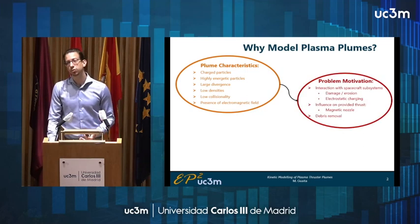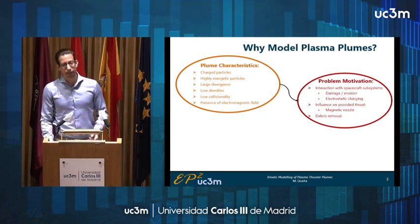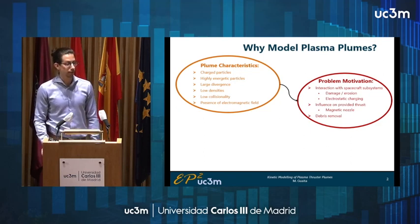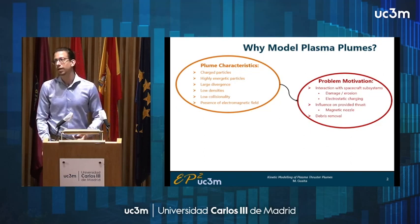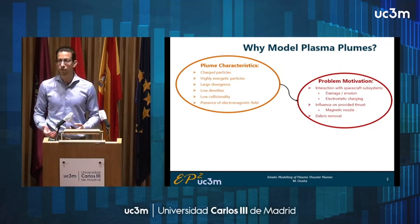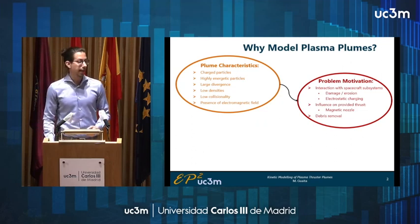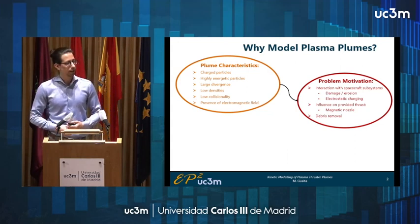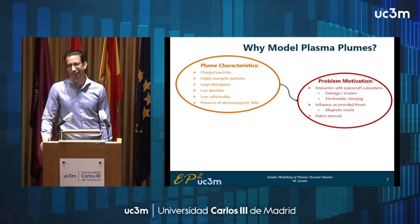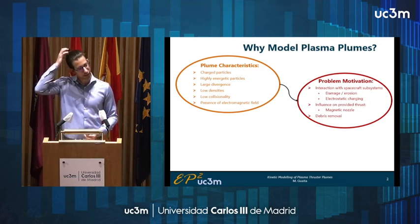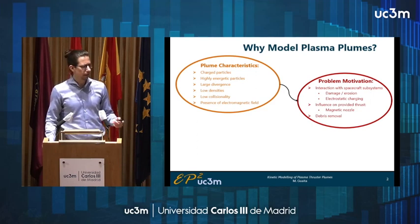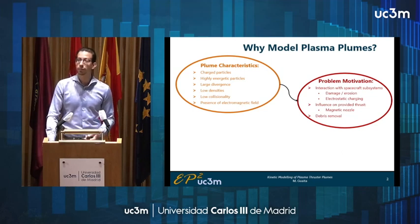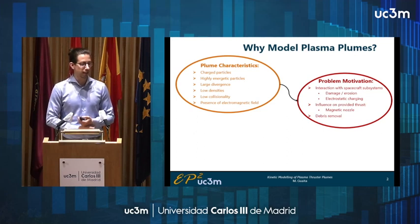This leads us to our problem motivation. Our main concern is the interaction between the plume and the thruster itself, because of the large divergence of these plumes and the high energy of the particles — we may have damage and erosion on the spacecraft components, and due to the charged nature of the particles we also have the possibility of electrostatic charging in the spacecraft. As seen in Diego's and Celia's presentation, the dynamics inside the plume may also affect the force produced by the thruster, especially in the presence of a magnetic nozzle. A last point is that plasma plumes and plasma thrusters have been proposed as a technique for debris removal to try to keep our orbits clean.